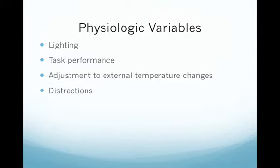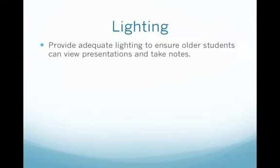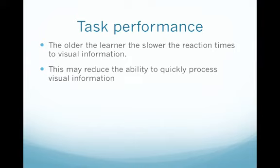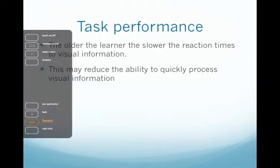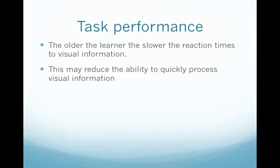Physiological variables include what the body requires to learn appropriately: lighting, task performance, adjustment to external temperature changes, and distractions. Provide adequate lighting so older students can view presentations and take notes — as people get older, senses decrease. The older the learner, the slower the reaction times to visual information, which may reduce the ability to quickly process visual presentations. Comfortable temperature and environment settings are also required, as adequate temperature control significantly aids the adult's ability to learn.